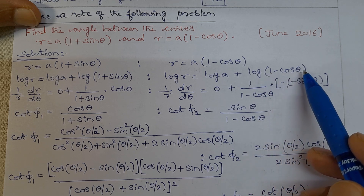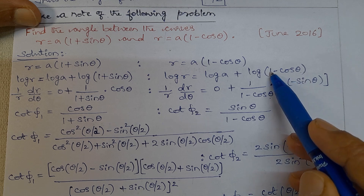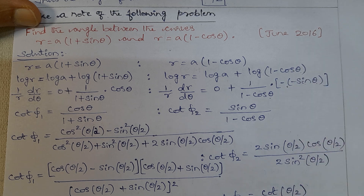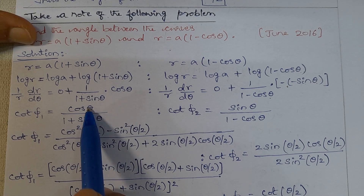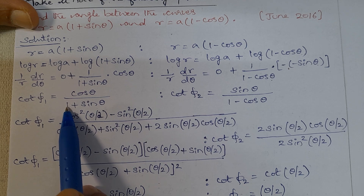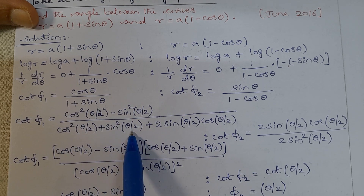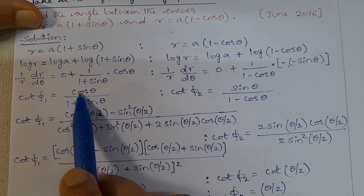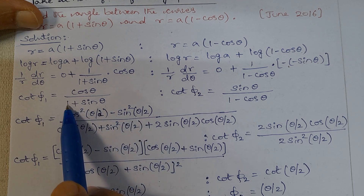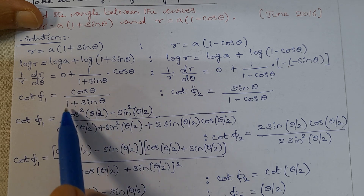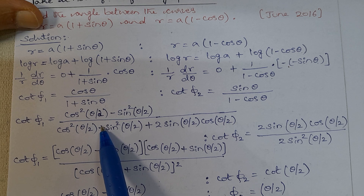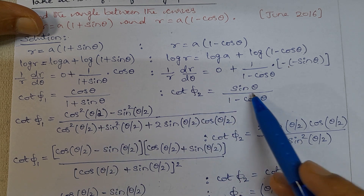Differentiating (1 minus cos theta) gives sin theta. So cot phi 1 is cos theta divided by sin theta, which we simplify using half-angle identities: cos squared (theta by 2) plus sin squared (theta by 2) equals 1, and sin theta equals 2 sin(theta by 2) cos(theta by 2).